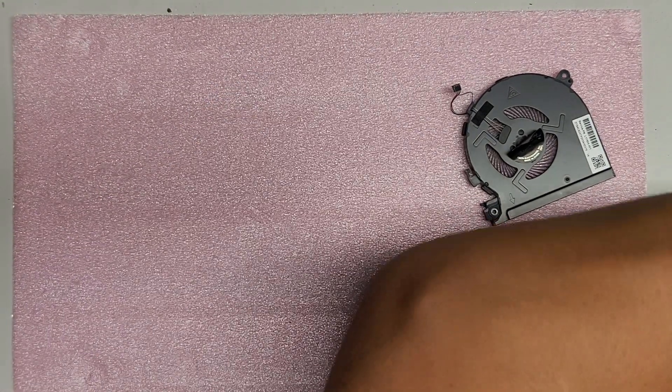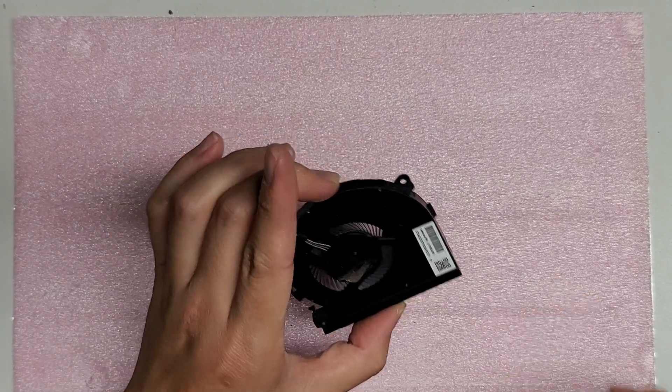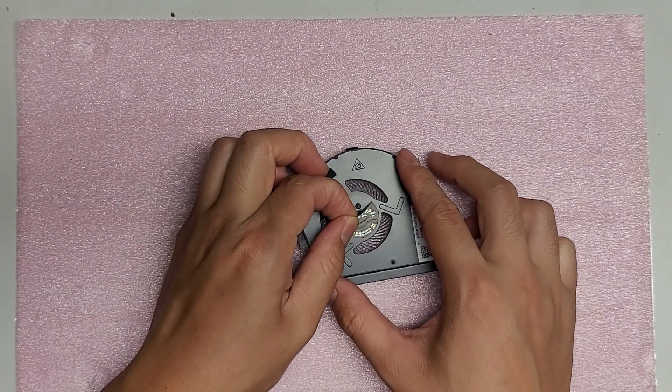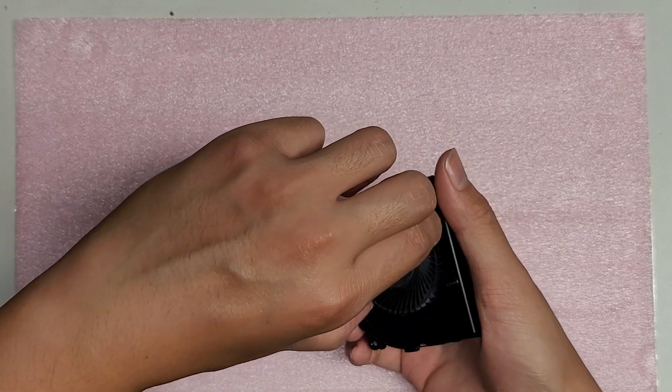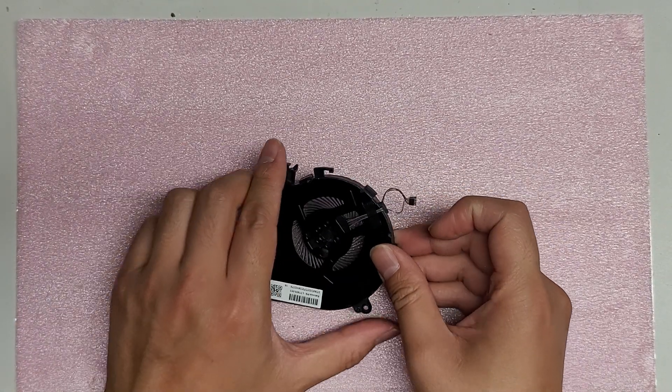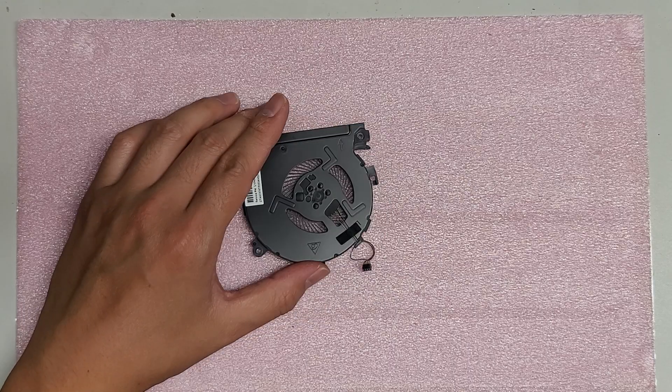All right, so I'm going to attempt to fix this fan by drilling it. First, what you want to do is remove the label. This fan you can't remove the blades, so it has a plastic backing here, so I'm going to try and fix this.